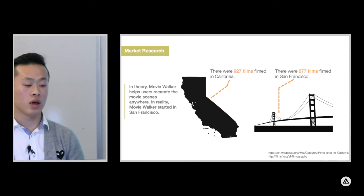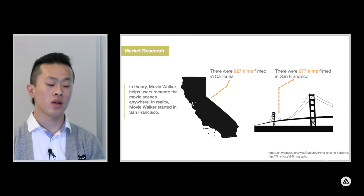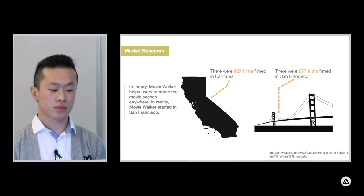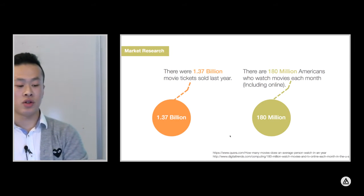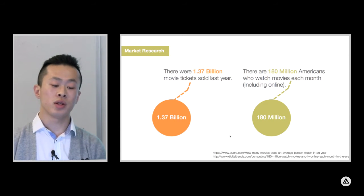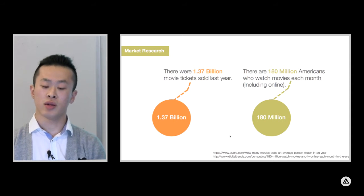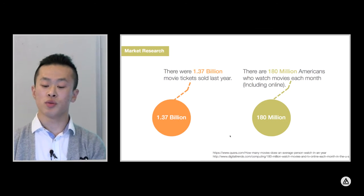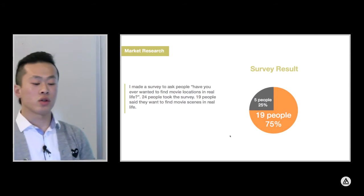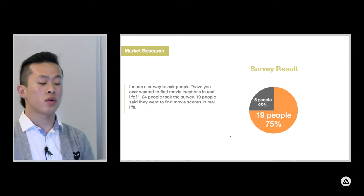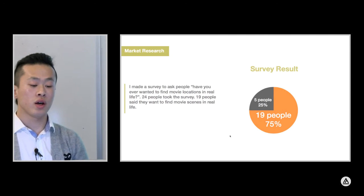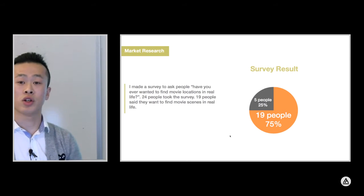In theory, Movie Walker can help users recreate movie scenes anywhere, for anyone. But in reality, Movie Walker started in San Francisco. Other data shows there were 1.37 billion movie tickets sold last year, which is quite a big number. Data also shows there are 180 million Americans who watch movies each month, including online. I also made a survey asking people just one simple question: have you ever wanted to find movie locations in real life? 24 people took the survey, and 19 said they want to find movie locations in real life.